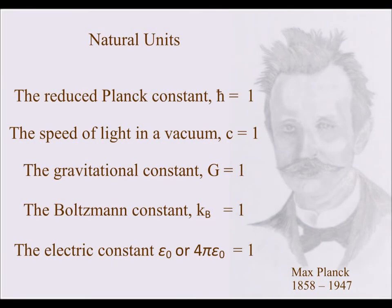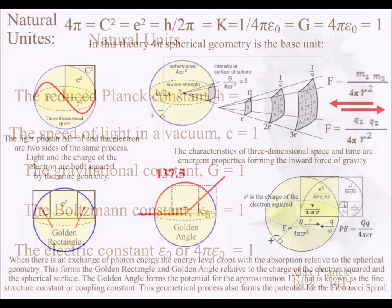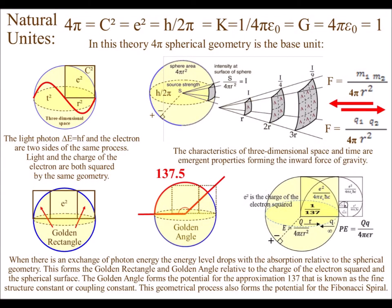My previous video explained how the fundamental constants could be set equal to 1 in the form of natural units. This video explains how the fundamental constants can represent one dynamic geometrical process that forms the characteristics of three-dimensional space with one variable in the form of time.